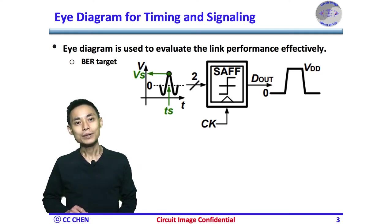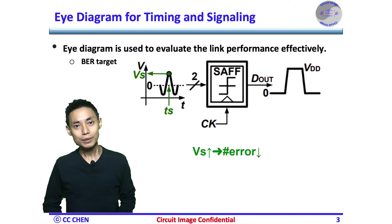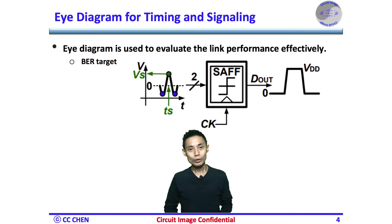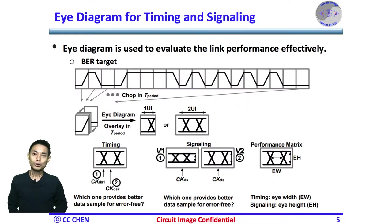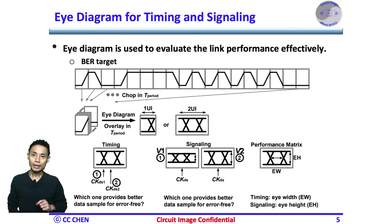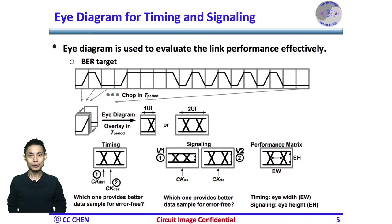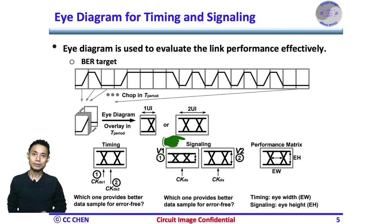Obviously, a bigger sampler voltage VS would make the sampler make a better decision with less error. Not only one sample — the green one — do we care about, but also every bit like the blue one. Therefore, chopping the waveform in each bit time or one unit interval and overlaying them shown in one UI or two UIs is necessary. As you can see, the diagram becomes a very useful tool for evaluating the timing of signaling performance as a design margin.